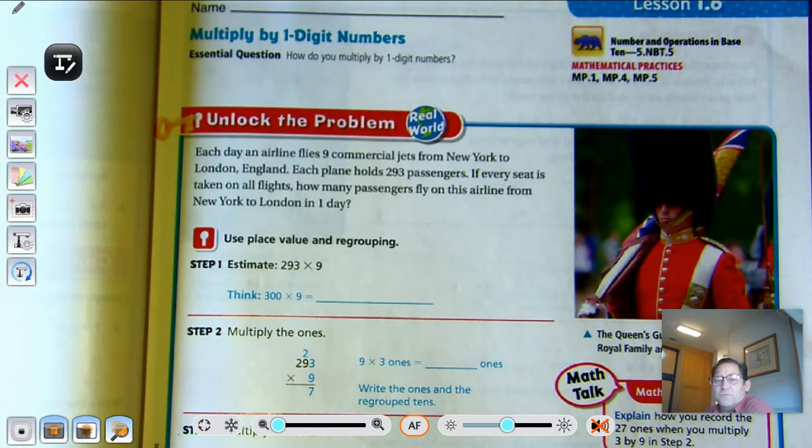Now, this should be a review, basically, for us in 5th grade. So let's look at the Unlock the Problem. Each day, an airline flies nine commercial jets from New York to London, England. Each plane holds 293 passengers. If every seat is taken on all flights, how many passengers fly on this airline from New York to London in one day?